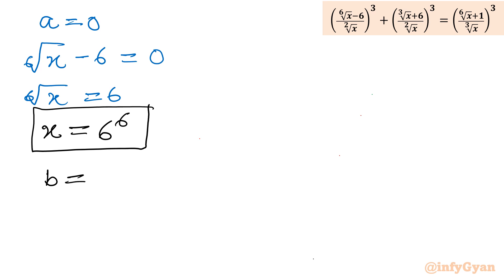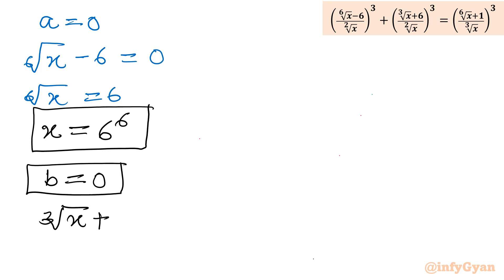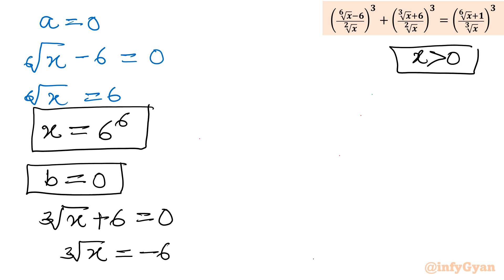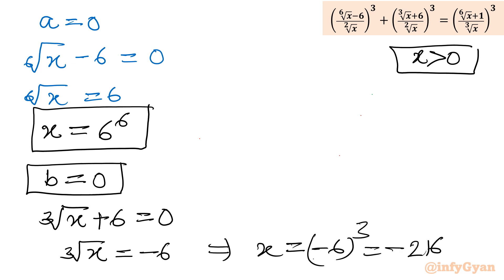Now for b = 0: cube root of x plus 6 = 0, so cube root of x = −6. Taking the cube of both sides gives x = (−6)³ = −216. But recall our domain requires x to be positive, so this solution is rejected.